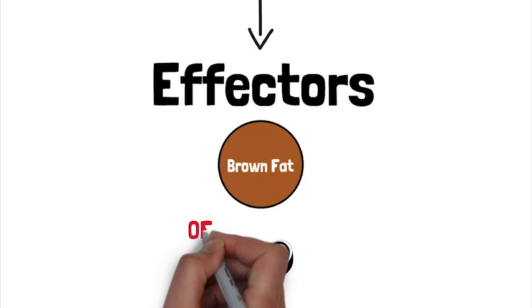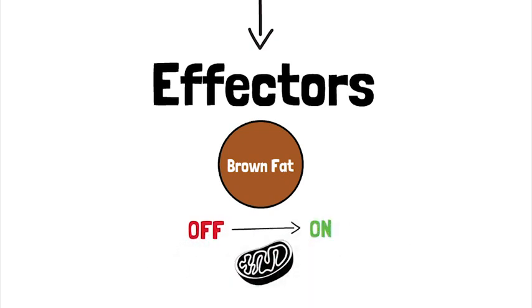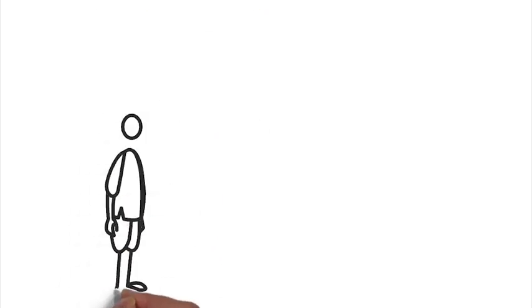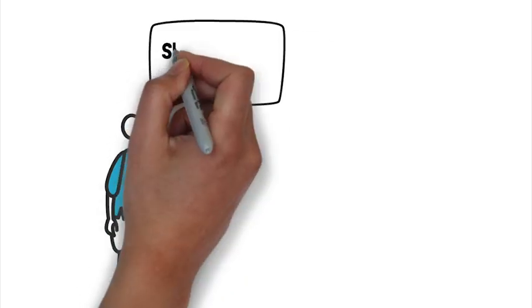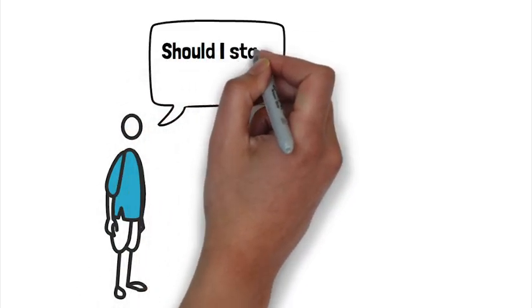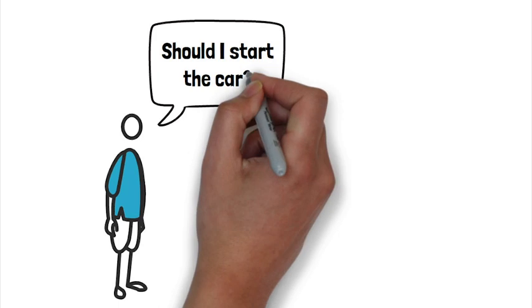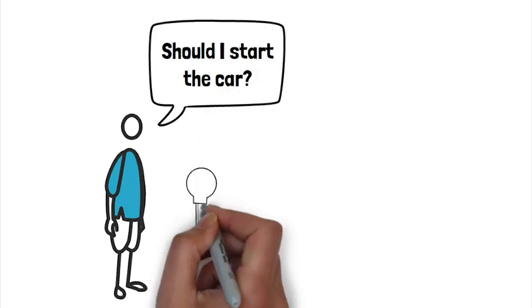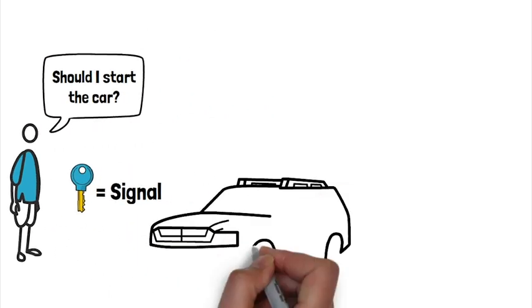Once the signal stimulates a brown fat cell, its mitochondria is activated. The process is similar to starting a car. In this scenario, much like the brain, you decide when to start the engine and signal the car to start by turning the key.